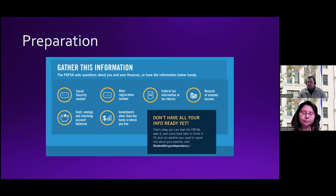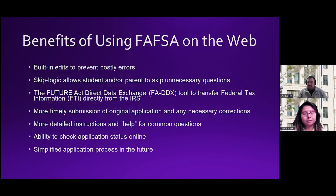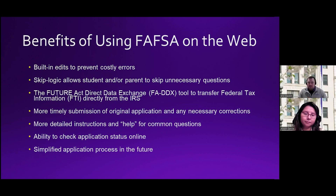How to prepare: know your social security number, your permanent resident number if you aren't a U.S. citizen, and your tax information. There is now a tool called the FADDX (the data exchange) — having your tax information will make it easier to connect to that. Also know your untaxed income, cash savings, checking, and investments. Benefits of using FAFSA on the web: there are built-in edits to prevent costly errors, skip logic to bypass unnecessary questions, and the FADDX tool to transfer your tax information directly from the IRS. There are detailed instructions — every question has a help icon — and you can check your status online.